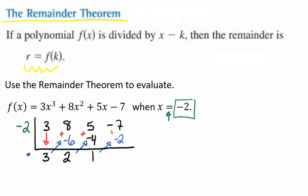And so we're going to add those. And negative 7 plus negative 2 is a negative 9. And so the remainder theorem is saying that the remainder, our r value, is the same thing as saying what is f of negative 2.